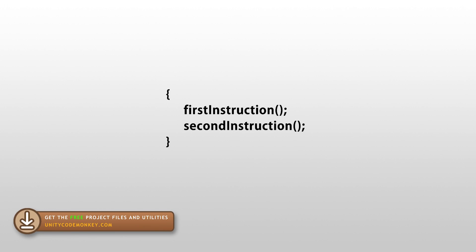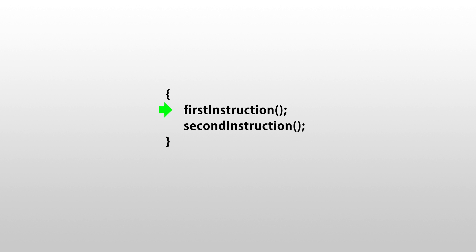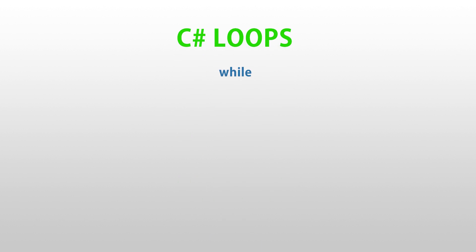When code runs, it runs from top to bottom. So first this instruction runs and then this one until the end of the code block. Loops let you run code inside of a code block multiple times. We're going to cover four types of loops: while, do-while, for, and foreach. We're also going to cover the two keywords related to loops: continue and break.